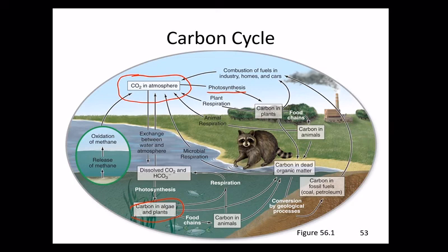In the higher trophic levels and food chains, herbivores eat the plants and bring that carbon into their system, and then carnivores consume the herbivores to bring the carbon into them. Whether it's a raccoon or some other animal, all of these go through respiration which returns carbon dioxide to the atmosphere. Plants also respire and return some carbon to the atmosphere — so that's a mini cycle.